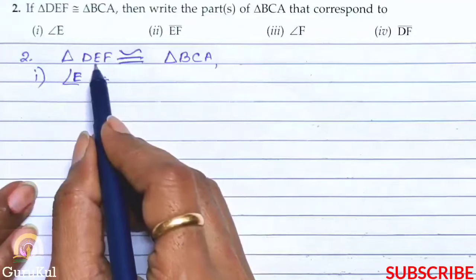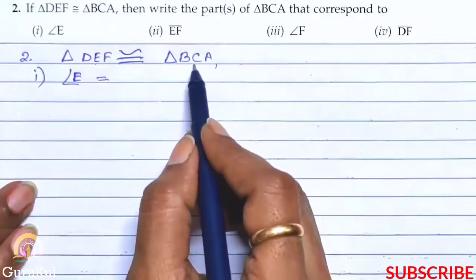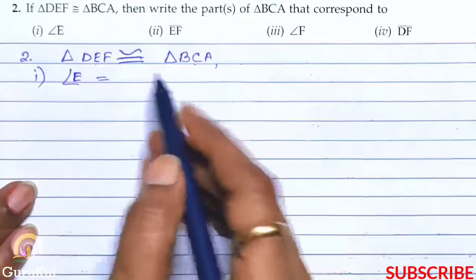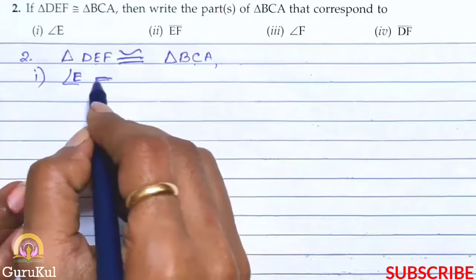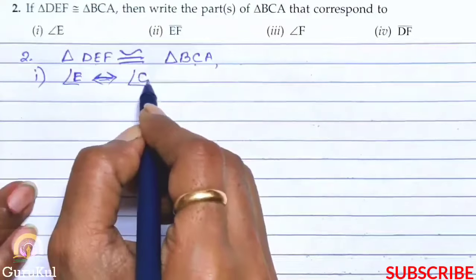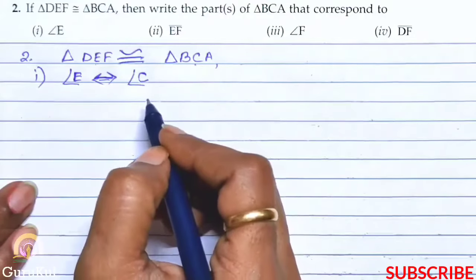Angle E is the middle one, right? So what is the second one, the middle one here? C. So angle E corresponds to angle C. First one done.